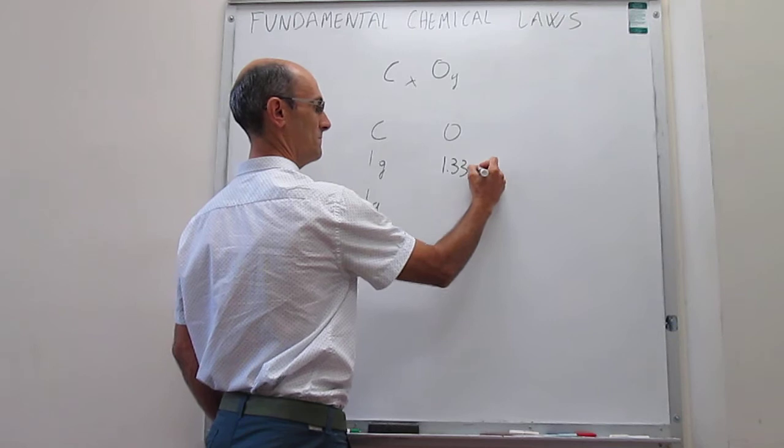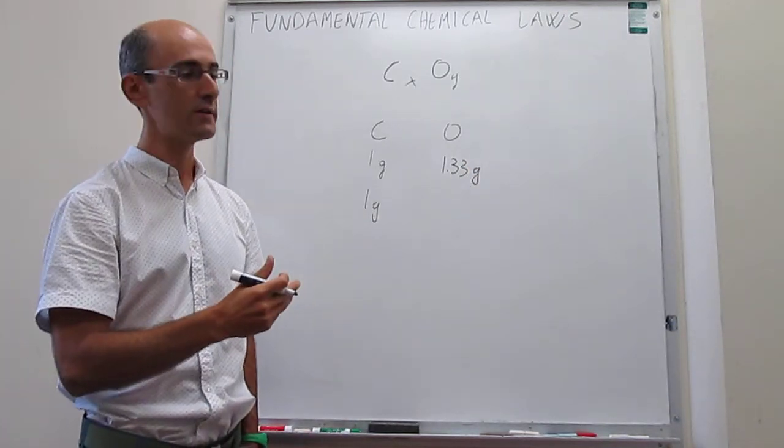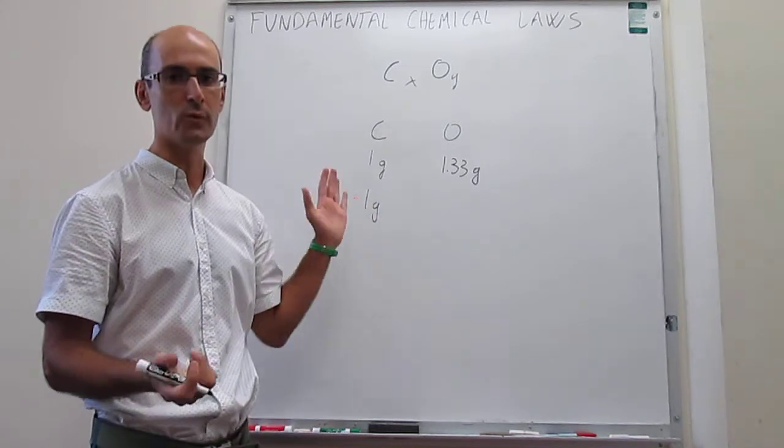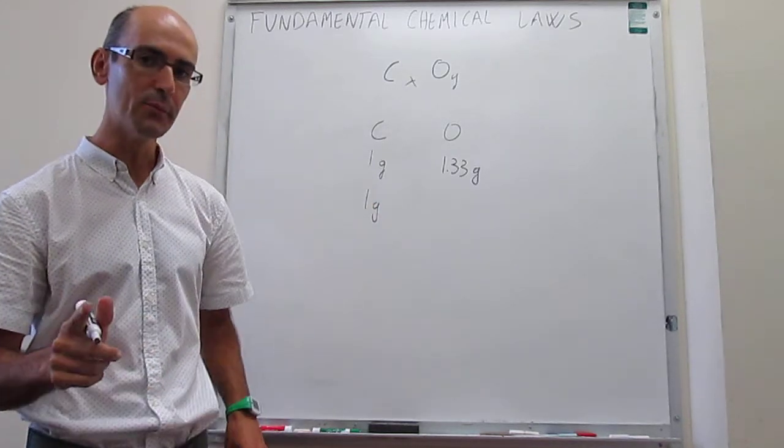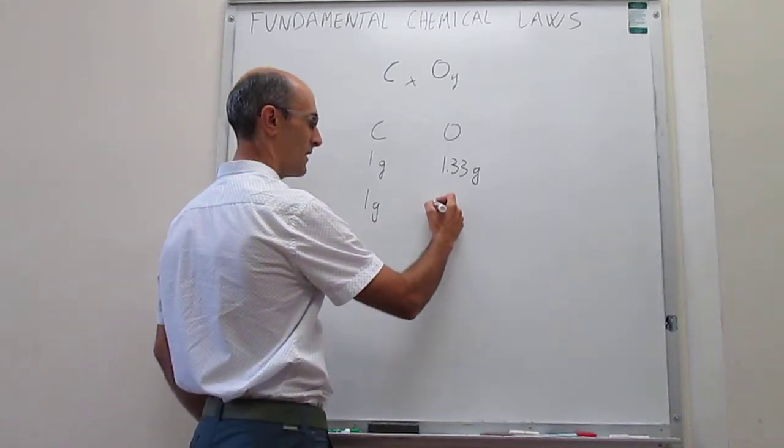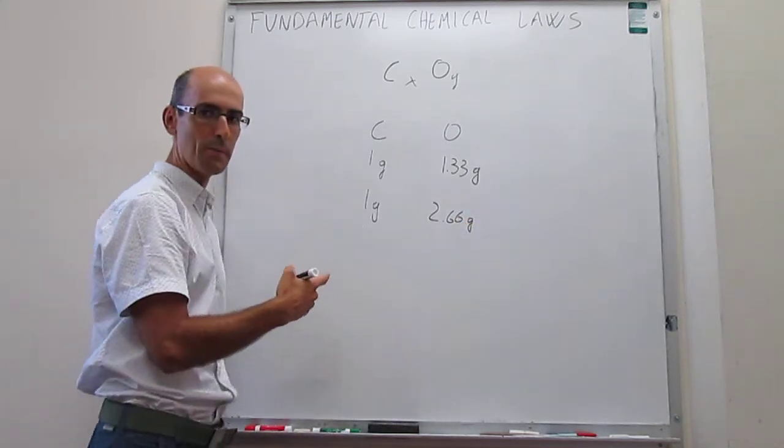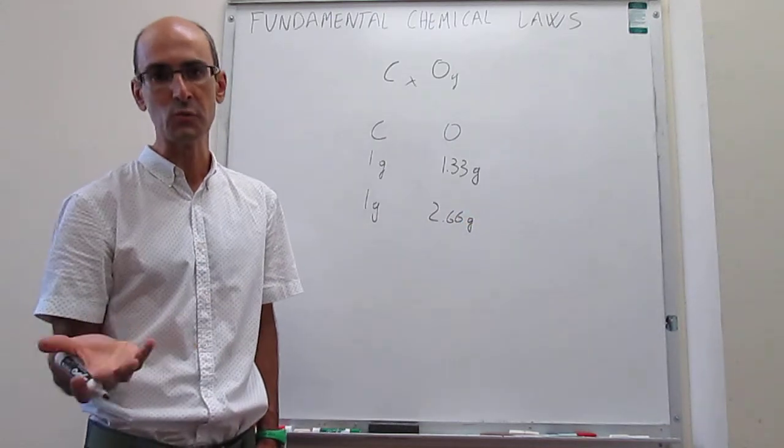If you take one gram of carbon and then analyze the mass of oxygen in the first compound, it turns out that the mass is 1.33 to 1. That is of no importance. What is important is that if you now go to the second compound, it turns out that the ratio or the mass that you get is 2.66 to 1. And again, these are two different compounds. We don't know what they are yet.